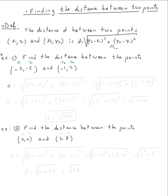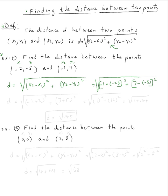The formula says distance equals the square root of (x2 minus x1) squared plus (y2 minus y1) squared. So x2 is negative one, minus x1 which is negative two, all squared; plus y2 is seven, minus y1 which is negative five, all squared, then take the square root.